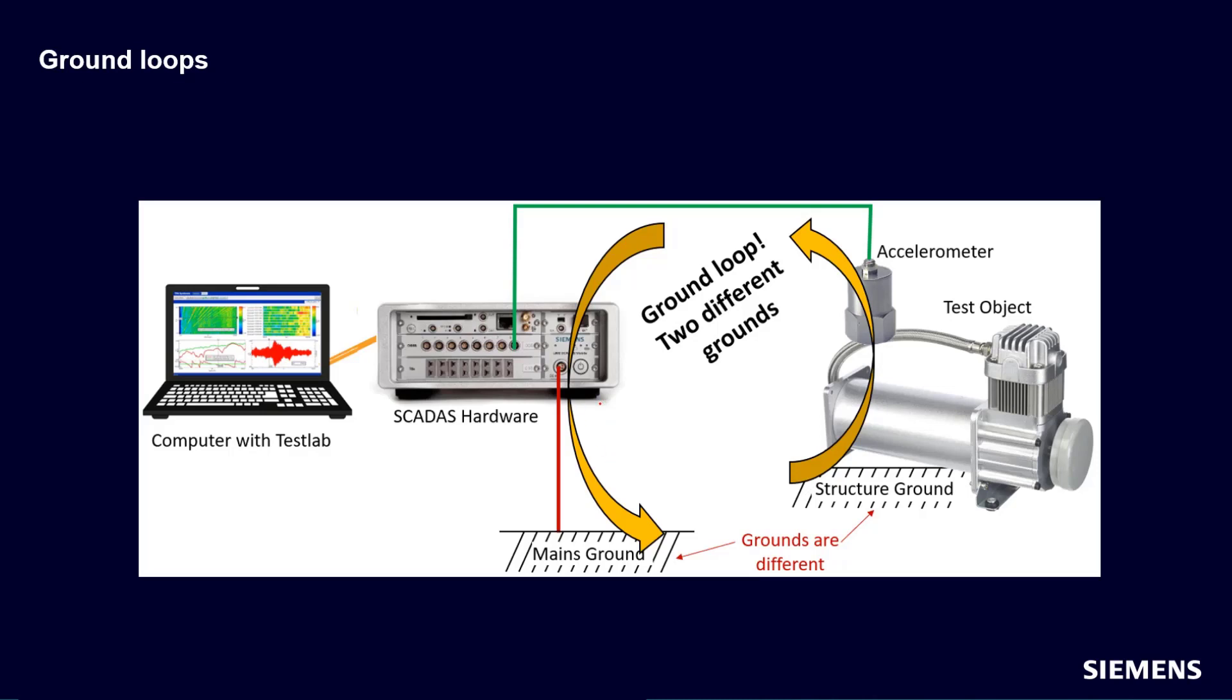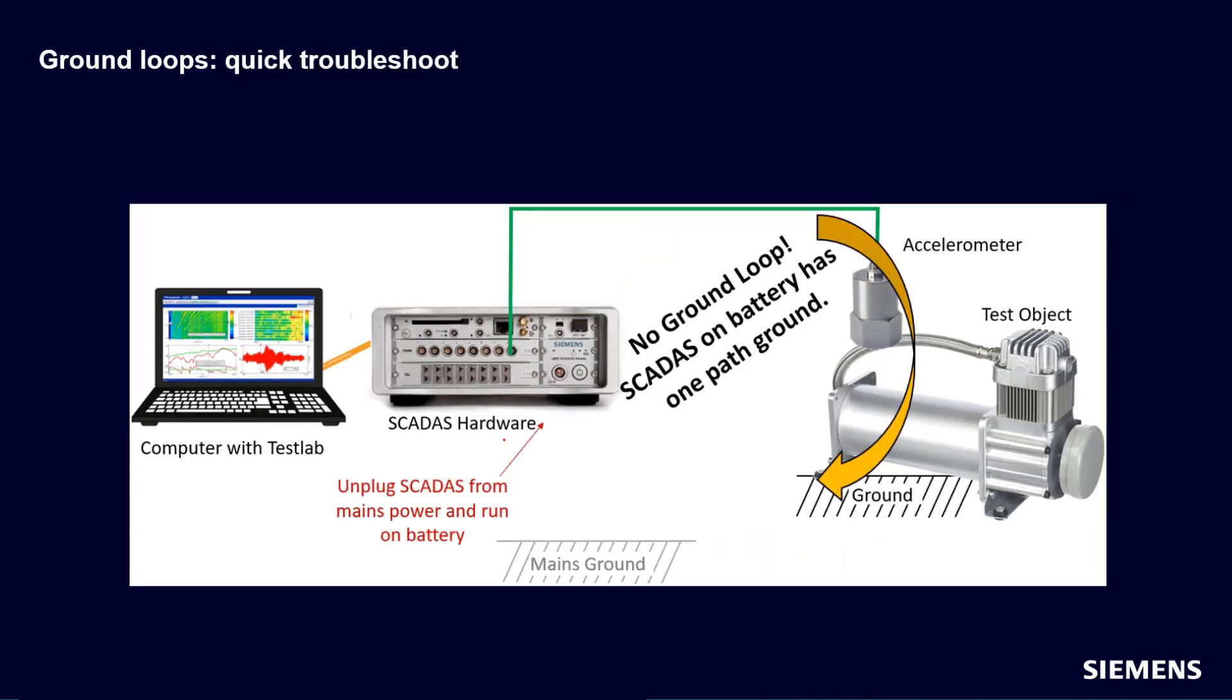If you're out in the field and you catch this, there's some things you could maybe do. You want to break one of these paths to ground. So for example, if you have one of our SimCenter SCATUS units, I can disconnect it from power because it has an internal battery that runs on DC. And when that is broken, there's only one path to ground. And if the electrical noise goes away, I know I have a ground loop. If it doesn't go away, then there's a chance that that 60 hertz is real. So quick troubleshooting, disconnect this.